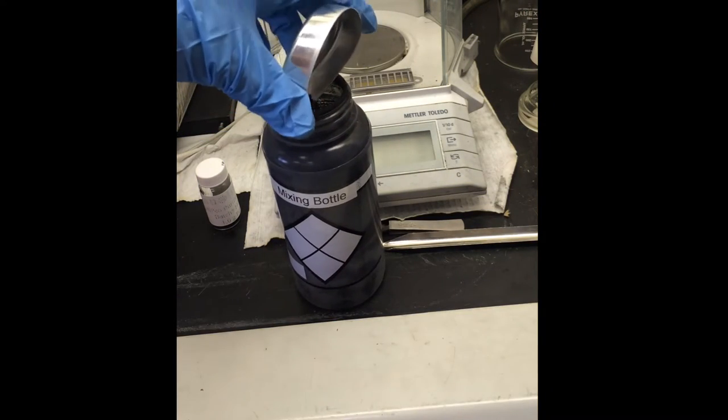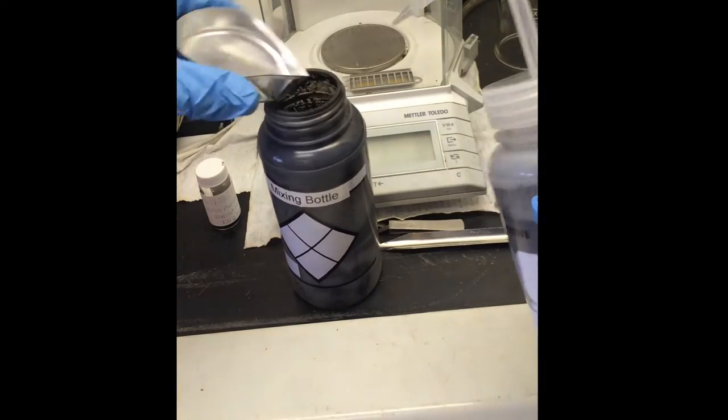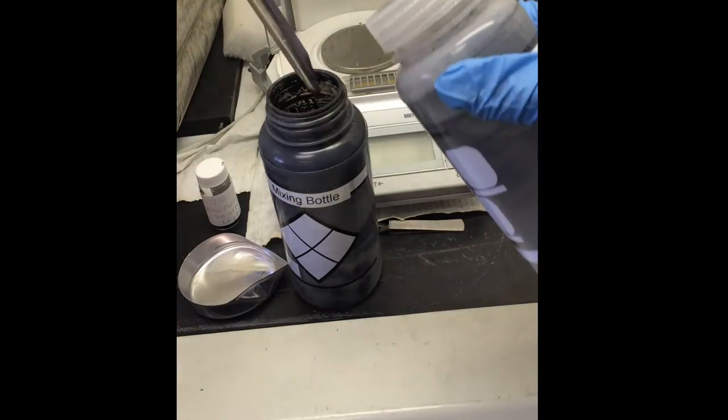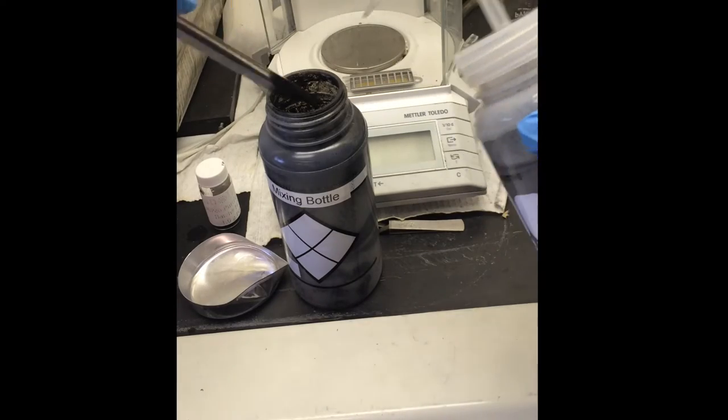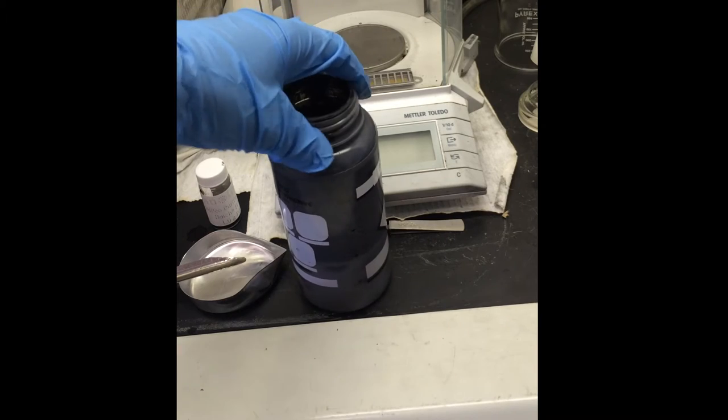Once the usable powder is weighed, the sample is added to a mixing bottle and rinsed with methanol. The methanol shown here is recycled and is reused each time a felt is made. This allows us to use less methanol overall in the process of creating the felts.